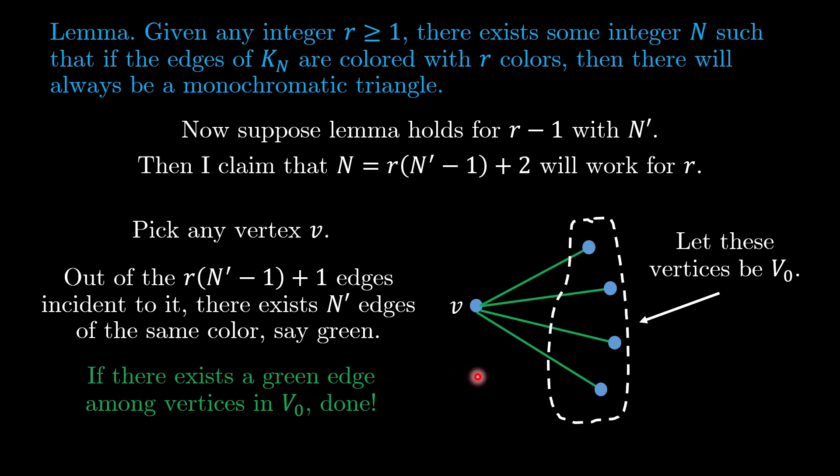Now there are two cases. Firstly, if there exists a green edge among the vertices in v_0, then we are done because it will close up to form a green triangle.